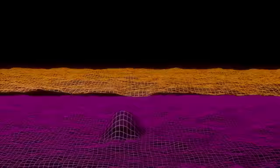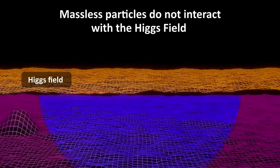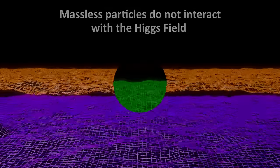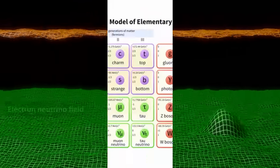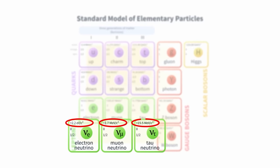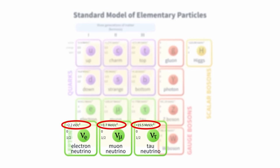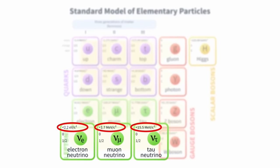But not all particles interact with the Higgs field. Photons and gluons, which have no mass, do not interact with it. Neutrinos are a bit of a mystery. They don't seem to interact with the Higgs field, but experiments seem to indicate that they must have a very slight mass. We don't know why yet. That's another story for another day.